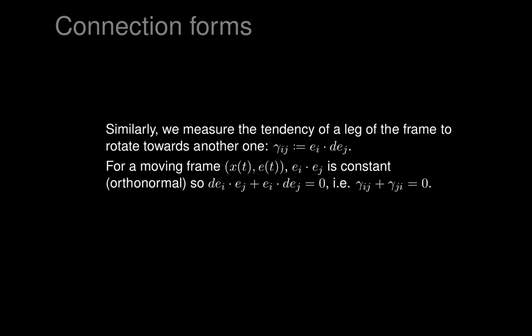Because a moving frame always stays orthonormal, e_i · e_j is always constant (zero if i ≠ j, one if i = j). Differentiating those dot products immediately gives that gamma_ij = -gamma_ji — the gamma's are anti-symmetric in i and j. It is a one-form, not a two-form, even though it has two anti-symmetric indices. We can collect all gamma_ij's into a single anti-symmetric matrix of one-forms called gamma. These are the Levi-Civita connection one-forms.